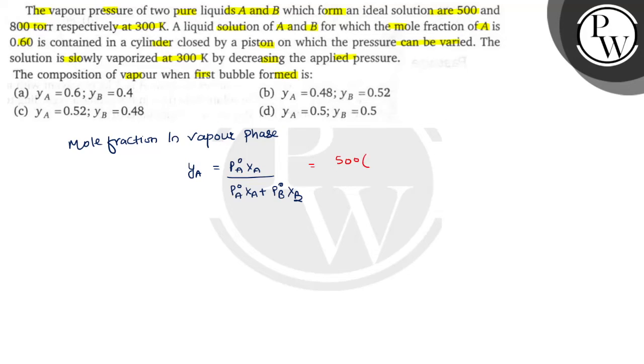Mole fraction of A, x_a jo question mein given hai which is 0.6 upon 500 into 0.6 plus p_b not 800 into x_b kitna ho jayega bachow? 1 minus x_a, 1 minus 0.6 which is 0.4.